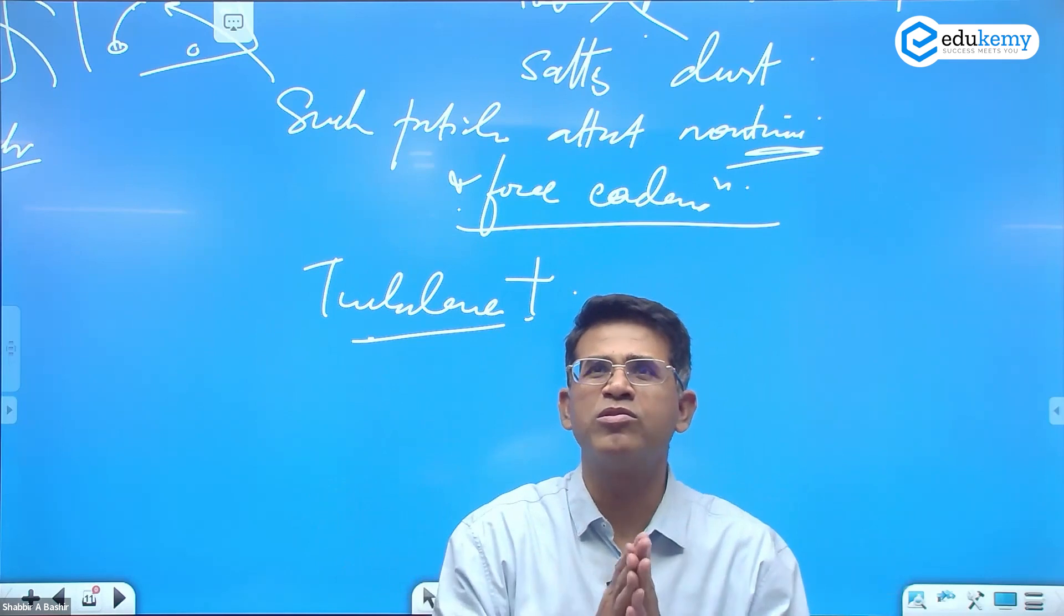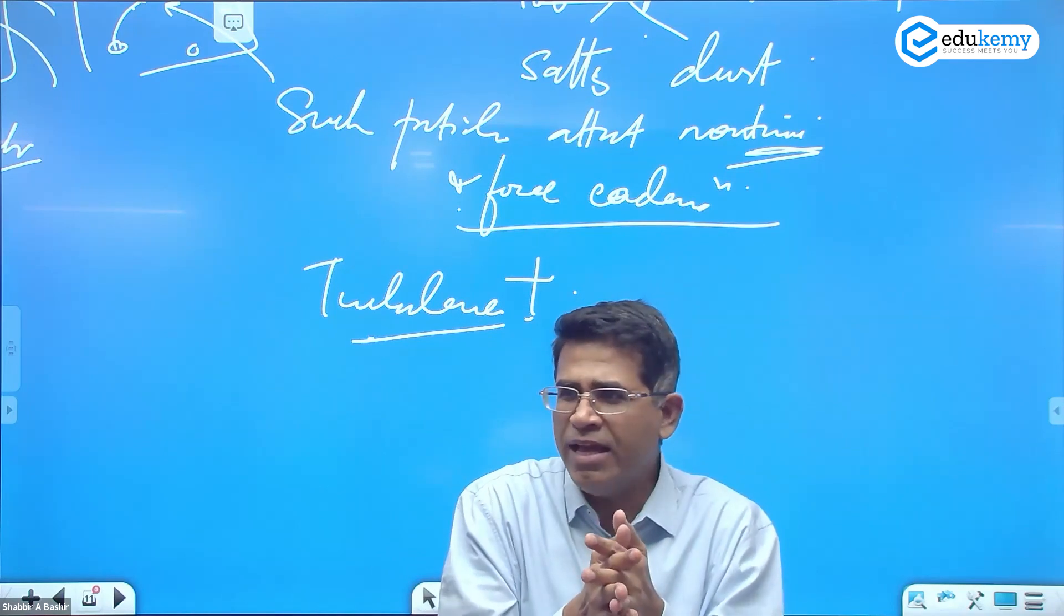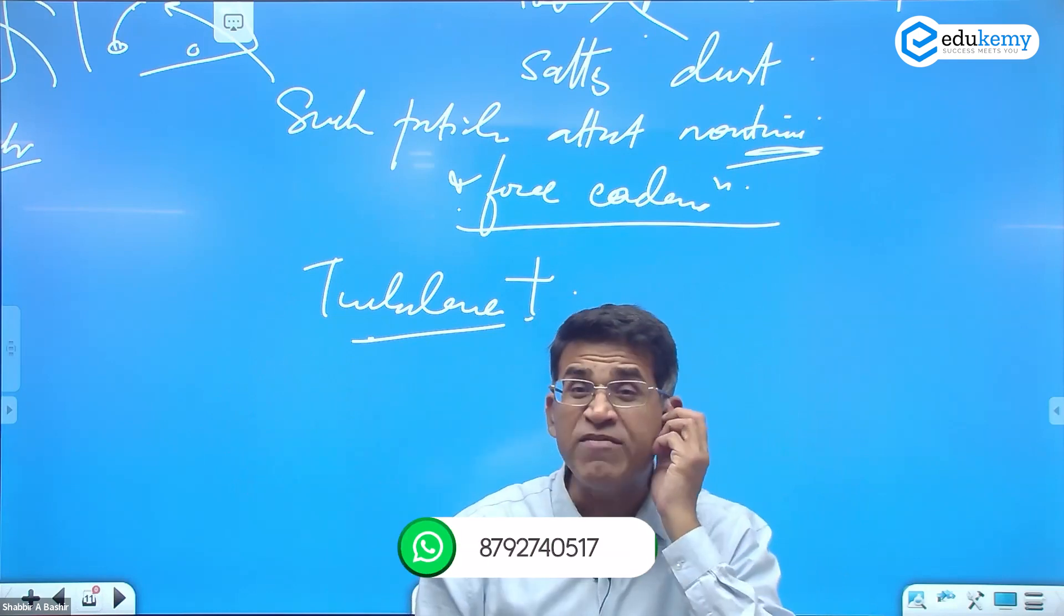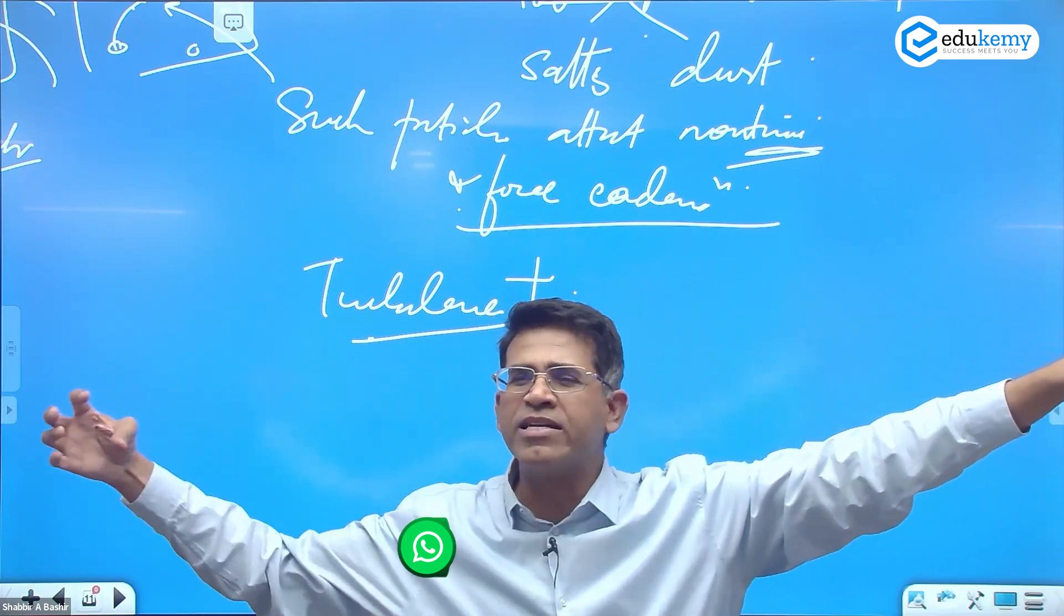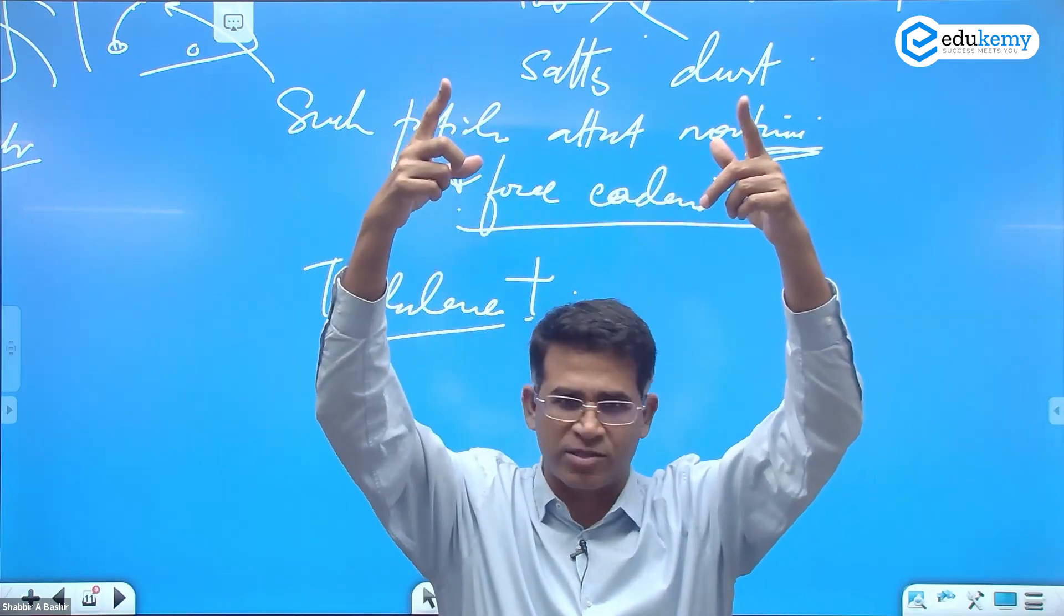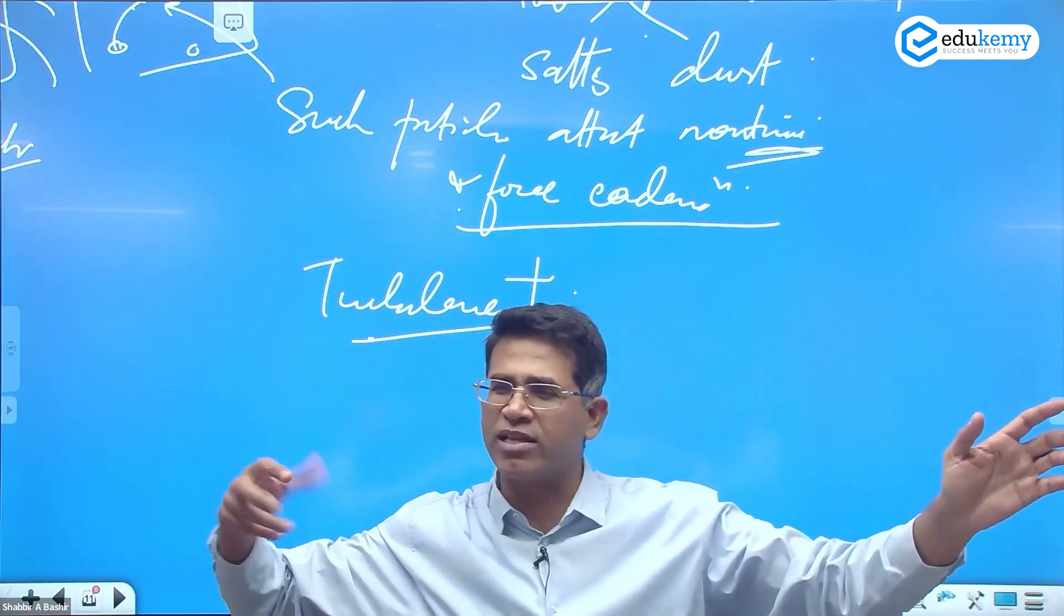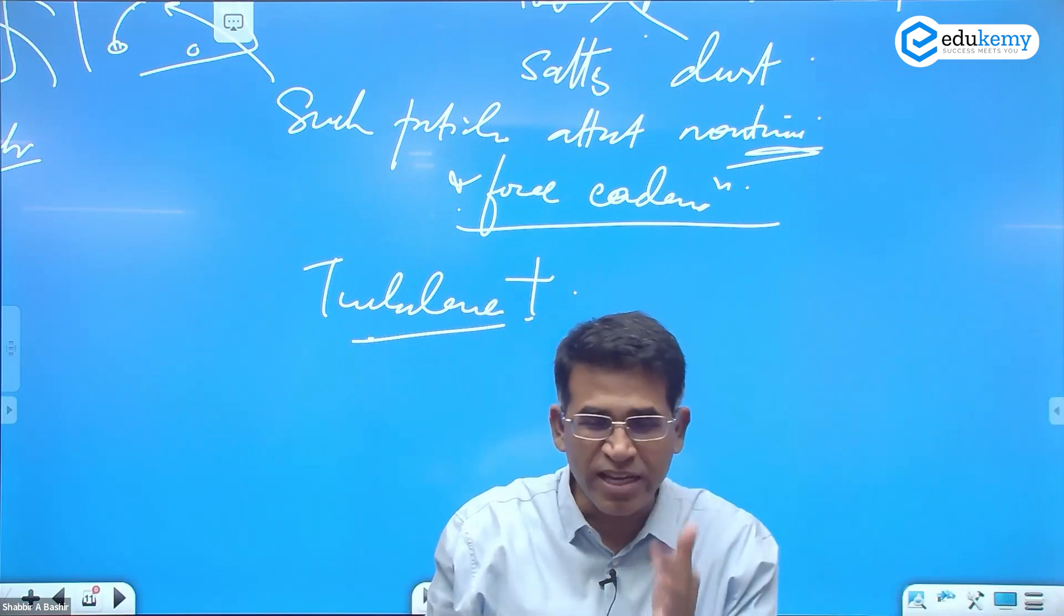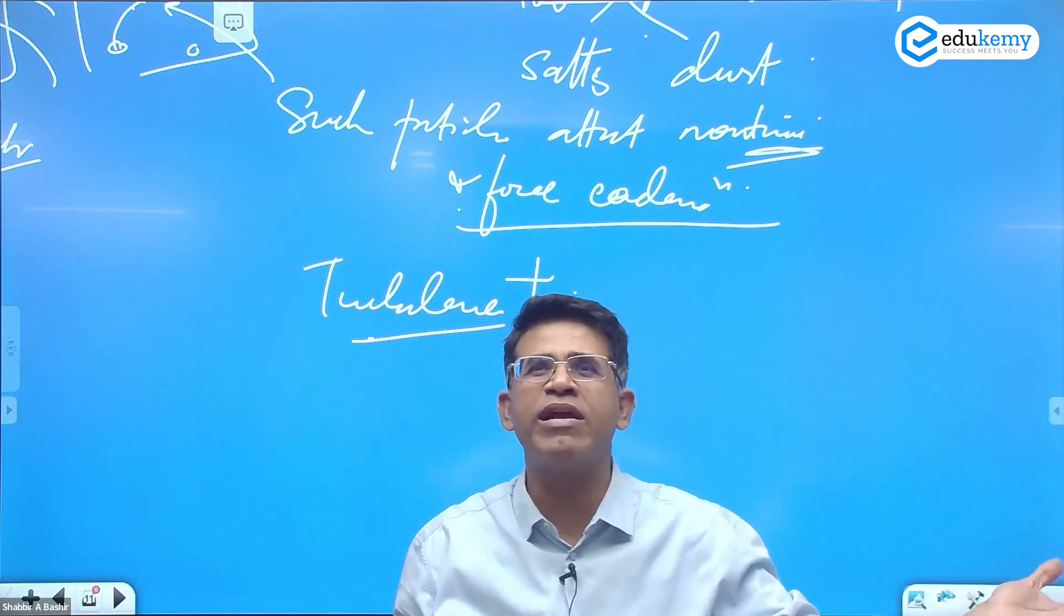You have seen when a jet flies, you know the trail of water vapor? Condensation, because clouds up there already have some droplets. So when a jet flies, because of strong turbulence, condensation happens with collision and coalescence. That trail is called wake. Or if you have seen when a boat moves very fast, you'll have turbulence of white foam behind it. That's called as wake. So wake means essentially turbulence.